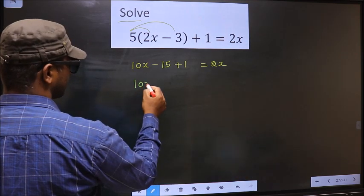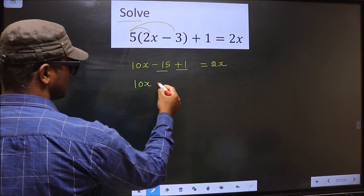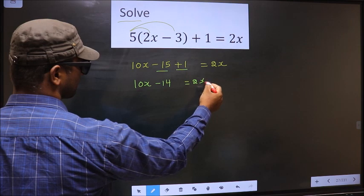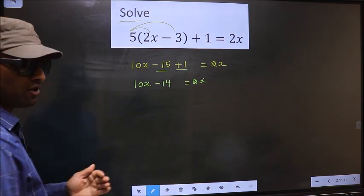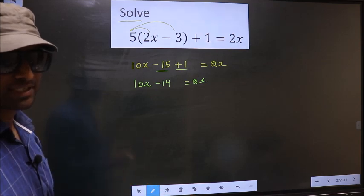Now 10x minus 15 plus 1 will result in minus 14 equal to 2x. Now all the x terms on one side and the numbers on other side.